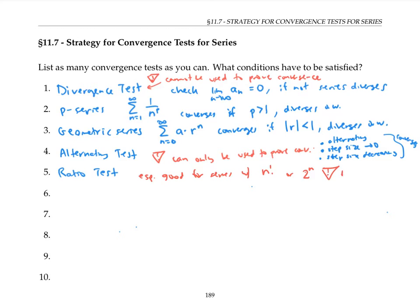But be careful, the ratio test will be inconclusive for what I call p-like series. So series that just have things like n's in them, and maybe square roots of n's in them, things that can be easily compared to a p-series are not good candidates for the ratio test. So if you happen to remember that, you can save some time by not trying the ratio test on those.